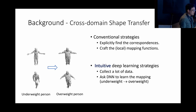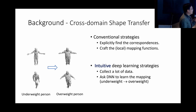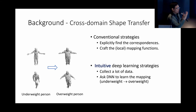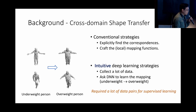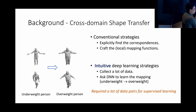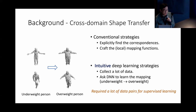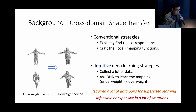Nowadays with machine learning, one intuitive approach is to collect a lot of data and let a neural network learn the mapping — input the underweight person, output the overweight person, with the DNN as a black box. However, this requires supervised learning with paired data, which is difficult to collect and sometimes impossible to obtain.